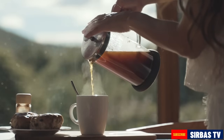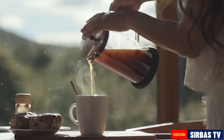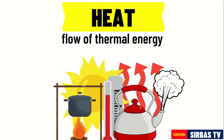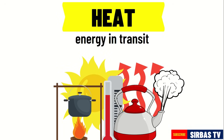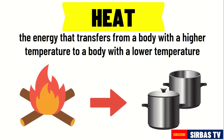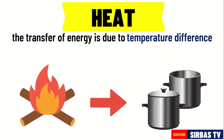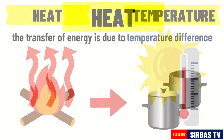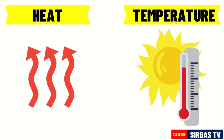The energy that is transferred from the boiling coffee to the mug and metal spoon is called heat. Heat is the flow of thermal energy. Heat is also an energy in transit — it is the energy that transfers from a body with a higher temperature to a body with a lower temperature. The transfer of energy is due to temperature difference of objects. People usually think that heat and temperature mean the same thing, but these two concepts are different from each other.